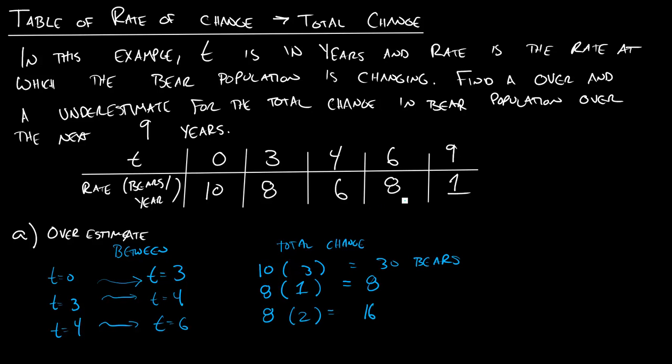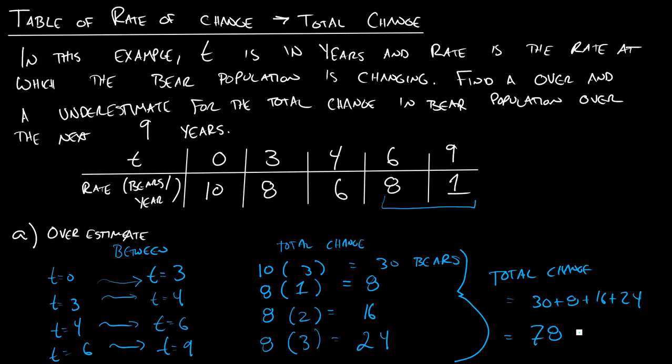And then finally, from t equals 6 to t equals 9, what's our total change in the bear population going to be? Well, we want an overestimate, and we're looking at that interval, so we will pick 8, and it's going to happen for 3 years. So we'll say over those 3 years, our population increases by 24 bears. And so if we add all this up to get our absolutely total change, we will get 30 plus 8 plus 16 plus 24. Over here we have 40, so 70, so we have 78 bears.